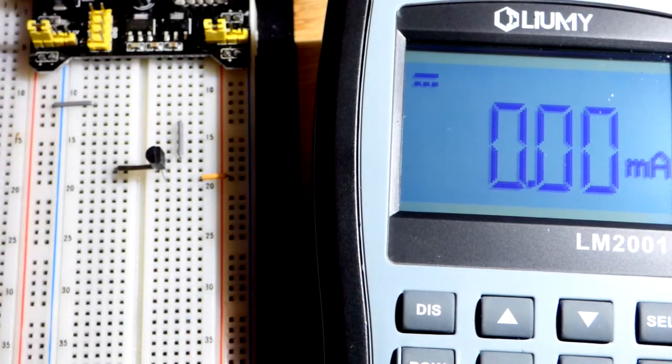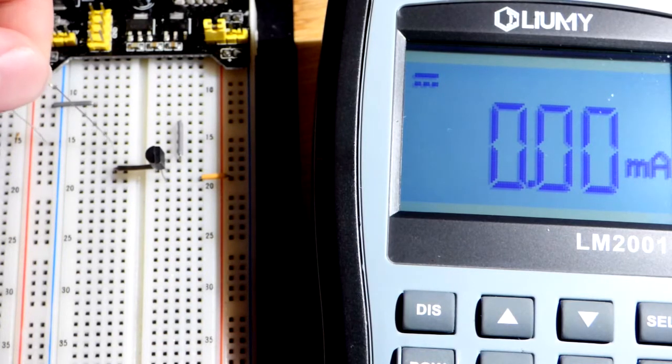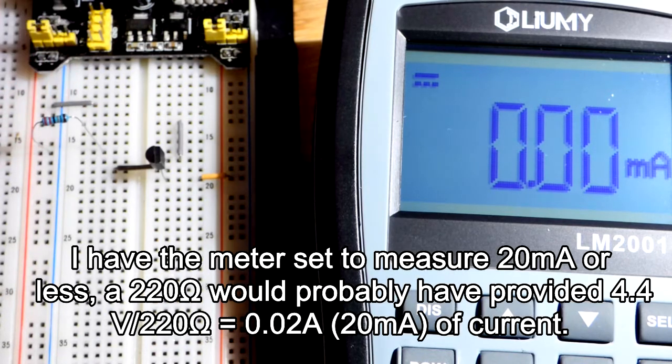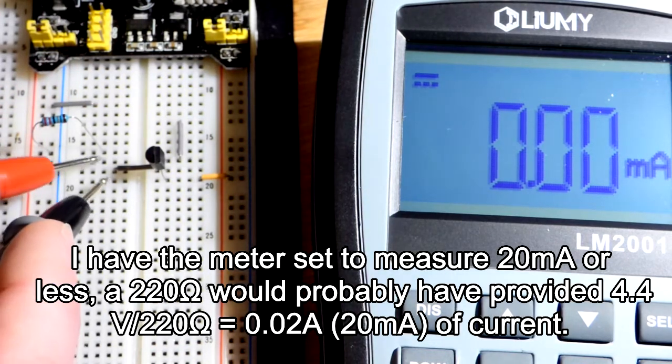So this was a 100 kilo-ohm resistor. Let's grab a 200 kilo-ohm resistor. We are in the 20 milliamps. We'll be safe right now. And we aren't getting anything. Oh, because I'm at the positive rail.